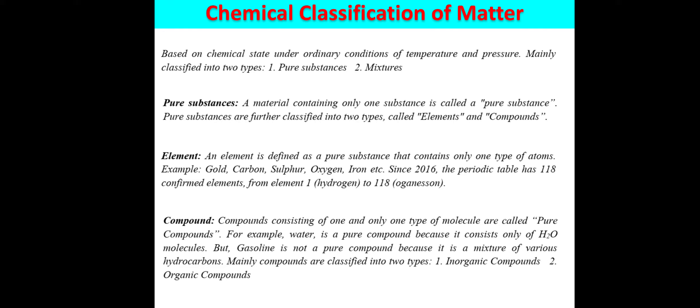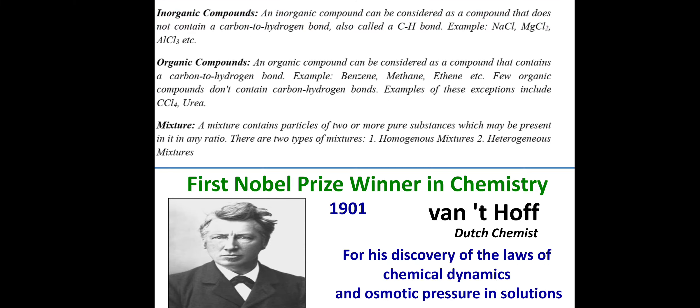Inorganic compounds are compounds that do not contain a carbon-hydrogen bond. In inorganic chemistry we study materials like sodium chloride, magnesium chloride, and aluminium chloride. These are ionic compounds — sodium is the cationic part and chloride is the anionic part. Similarly in magnesium chloride, magnesium is the cation and chloride is the anion — the combination of cation and anion gives us inorganic compounds.